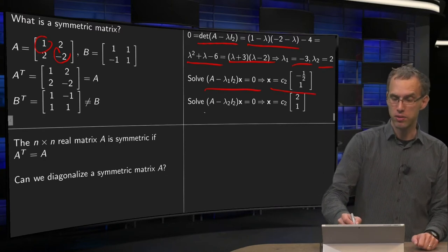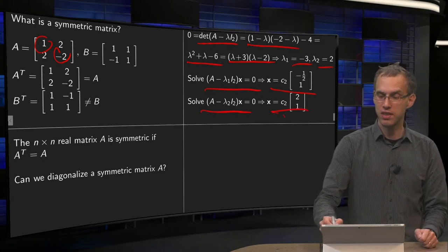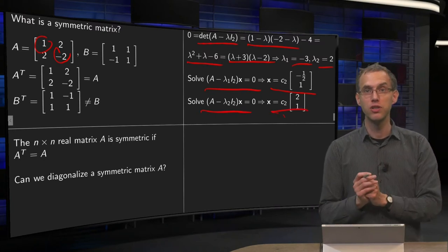and do the same for the second eigenvalue. We give immediately the result, you get the constant times 2 1.